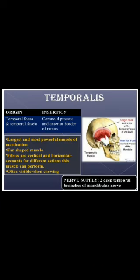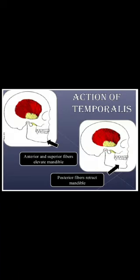The temporalis muscle is a fan-shaped, very large and very powerful muscle. It contains vertical and horizontal fibers and is often visible when chewing. It originates from the temporal fossa and temporal fascia, and is inserted to the coronoid process and anterior border of the ramus of the mandible. It is supplied by the deep temporal branches of the mandibular nerve. Action: anterior and superior fibers help in elevation of the mandible, while the posterior fibers help in retraction of the protruded mandible.